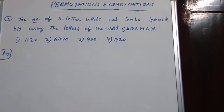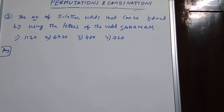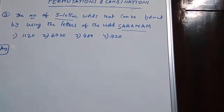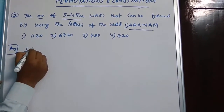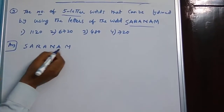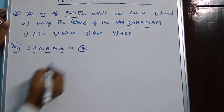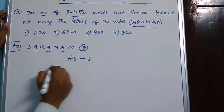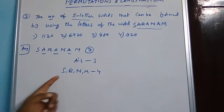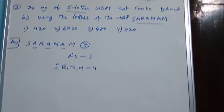The number of 5-letter words that can be formed by using the letters of the word SERENAM — S, A, R, A, N, A, M. So we have to find 5-letter words using the letters of the word SERENAM. In the given word SERENAM, there are 1, 2, 3, 4, 5, 6, 7 letters total. Among them, A's are repeated — A appears 3 times — and the remaining distinct letters S, R, N, M are 4 distinct letters. So 4 distinct letters plus 3 A's gives 7 total.